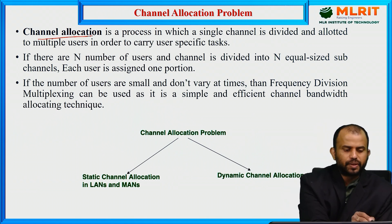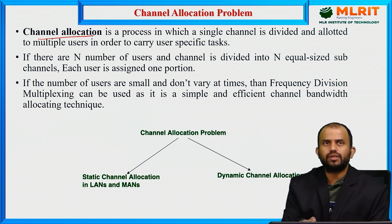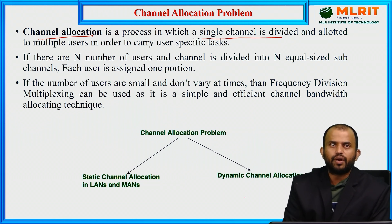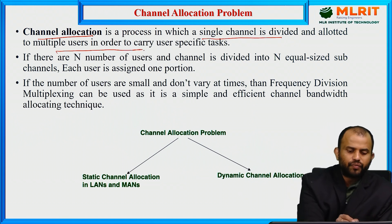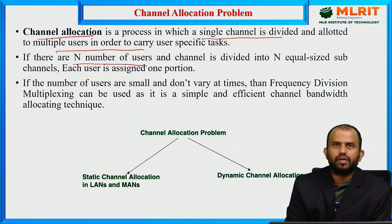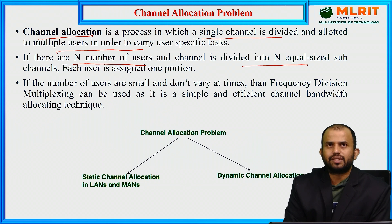This brings us to channel allocation. When we assign a multi-access channel in the Medium Access Control sublayer, we use multi-channel communication. In multi-channel communication, we access N number of channel allocations. A single channel is divided into N multiple channels based upon the number of users. If N number of users and N number of channels are available, we divide the channels into equally sized sub-channels, and each user is assigned one portion.